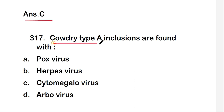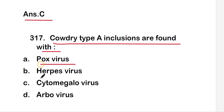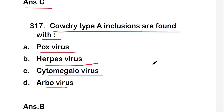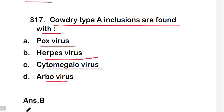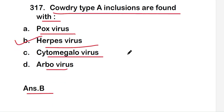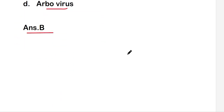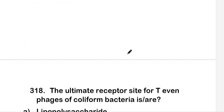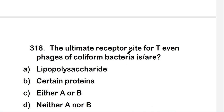The next question is: Cowdry type A inclusions are found with — poxvirus, herpes virus, cytomegalovirus, or arbovirus? The right answer is option B, that is herpes virus.